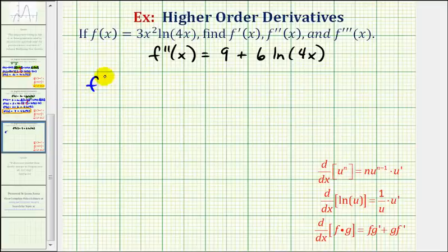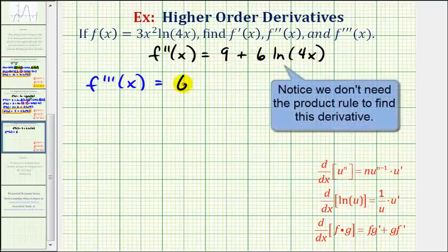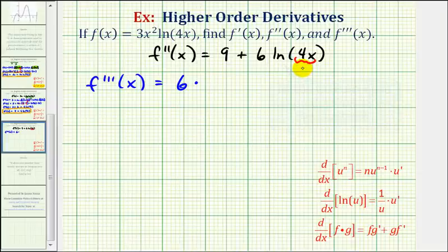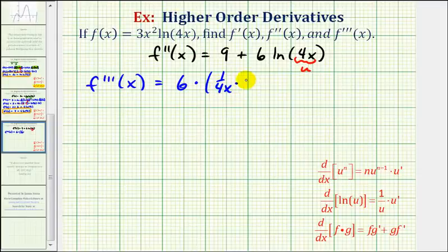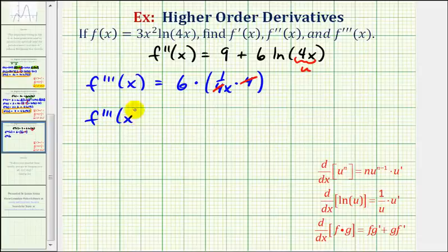To find the third derivative, f triple prime of x, we'll find the derivative of the second derivative. The derivative of nine is zero. The derivative of six natural log four x is six times the derivative of natural log four x. Again, this is a composite function — the inner function equals u — so the derivative of natural log u with respect to x is one over u times u prime, which is one over four x times four. This four and this four simplify to one, so our third derivative equals six times one over x, or six divided by x.